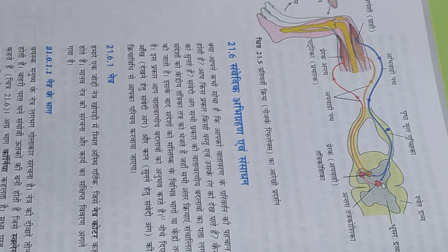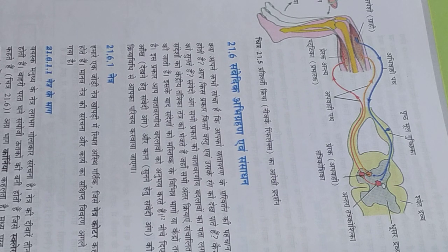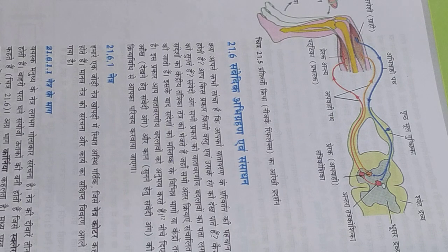The first category of actions is related to internal body organs like the digestive system, circulatory system, respiratory system, and excretory system, and it is controlled by the medulla oblongata in our brain.